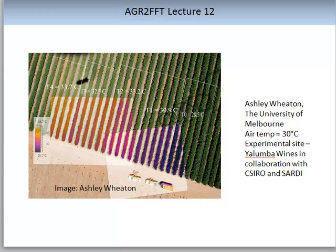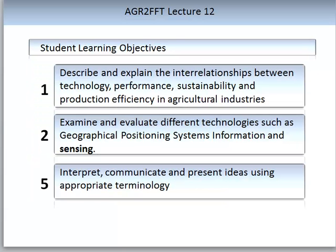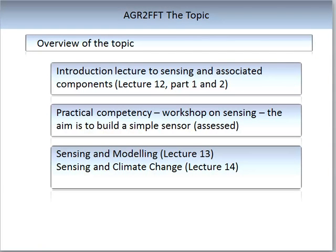This sensor shows a link between grapevine stress and reduced water availability. In this lecture we will look at three learning objectives: we will describe and explain the relationships between production efficiencies, technology, and performance in agricultural industries; we will evaluate and examine different technologies in sensing; and we will interpret, communicate, and present ideas using appropriate terminology.